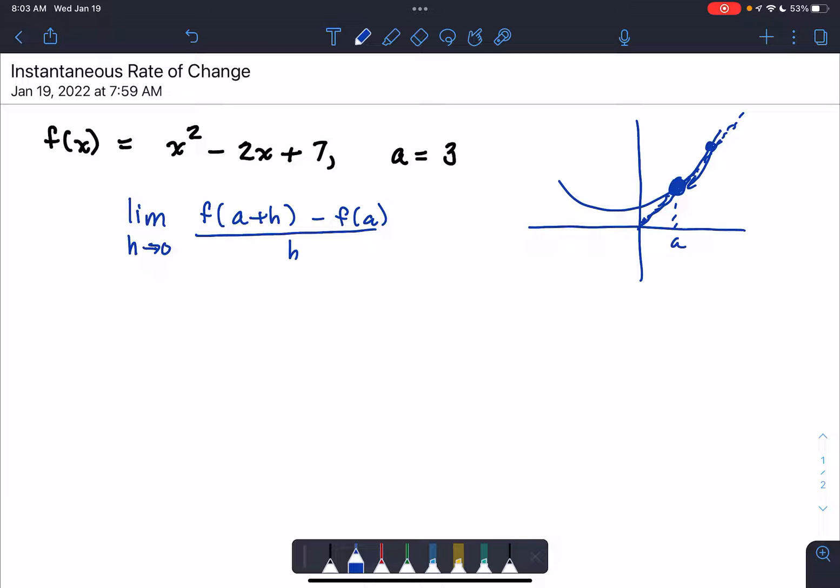Now in this case a is 3, so we have the limit as h approaches 0 of f of 3 plus h minus f of 3 over h. So at this point it's a little bit more clear what to do.